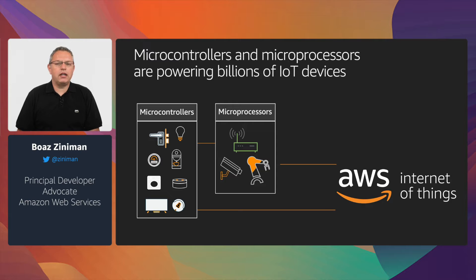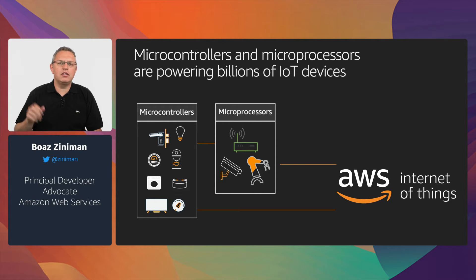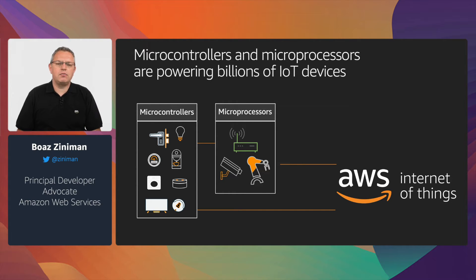IoT devices are powered by embedded processors called microcontrollers or microprocessors. Microcontrollers, sometimes called MCUs, are usually much smaller — a single chip with very simple, low memory, limited power processors. You can find them in smart bulbs, locks, vacuum cleaners. Devices such as the ESP32 and other models cost just a few cents or a few dollars, and when you're buying them in bulk, they are extremely cheap, so you see them everywhere.